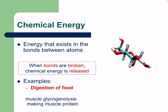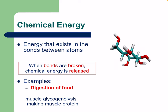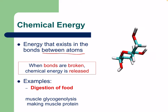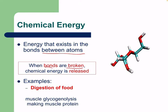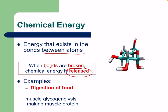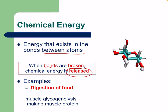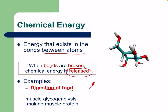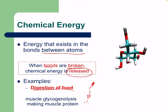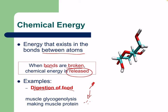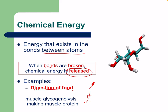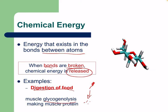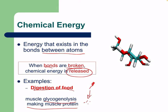Chemical energy is energy that exists in the bonds between atoms. When bonds are broken, the chemical energy is released, as we've talked about before. A simple example is digestion of food — we take that big food molecule and break it down into its constituents. We also have processes such as glycogenesis, glycogenolysis (breakdown of glycogen), and making muscle protein.